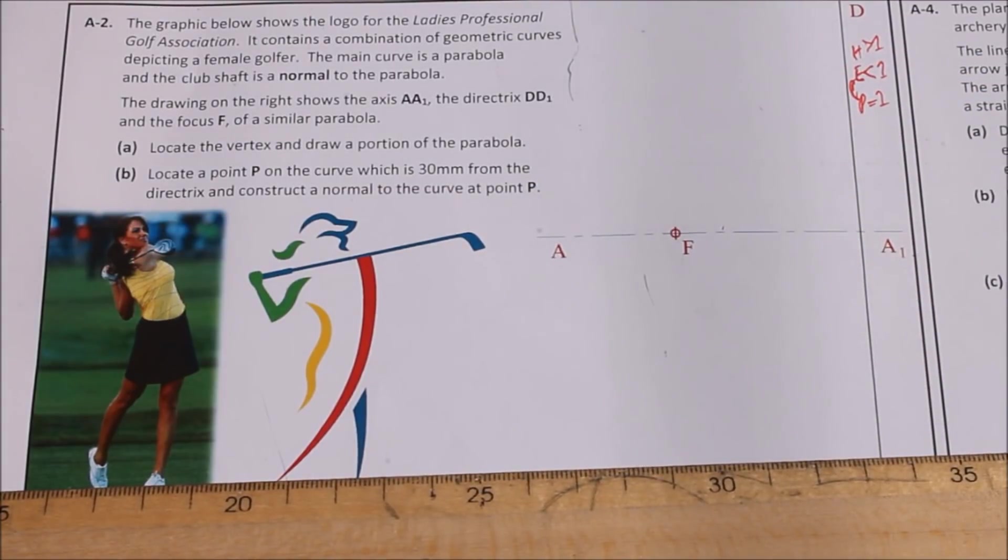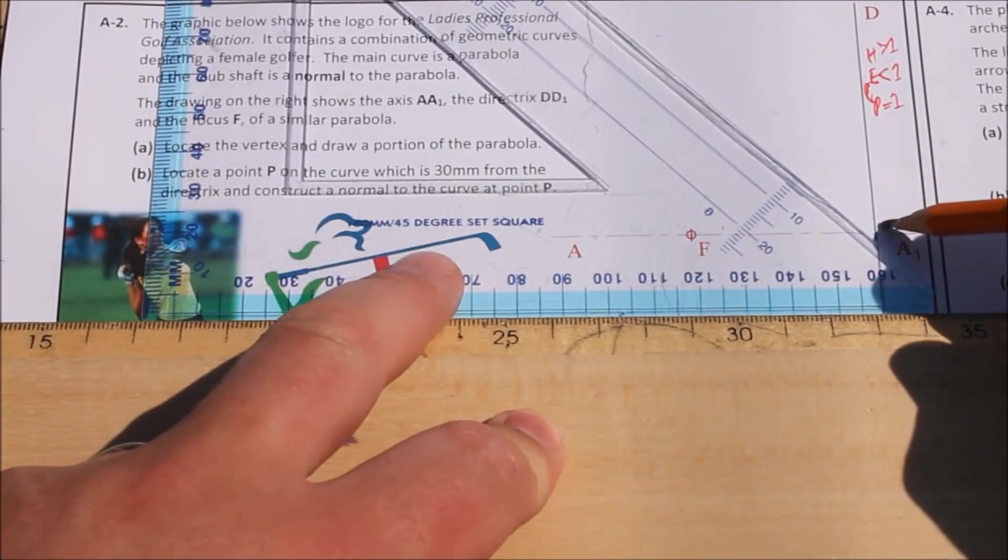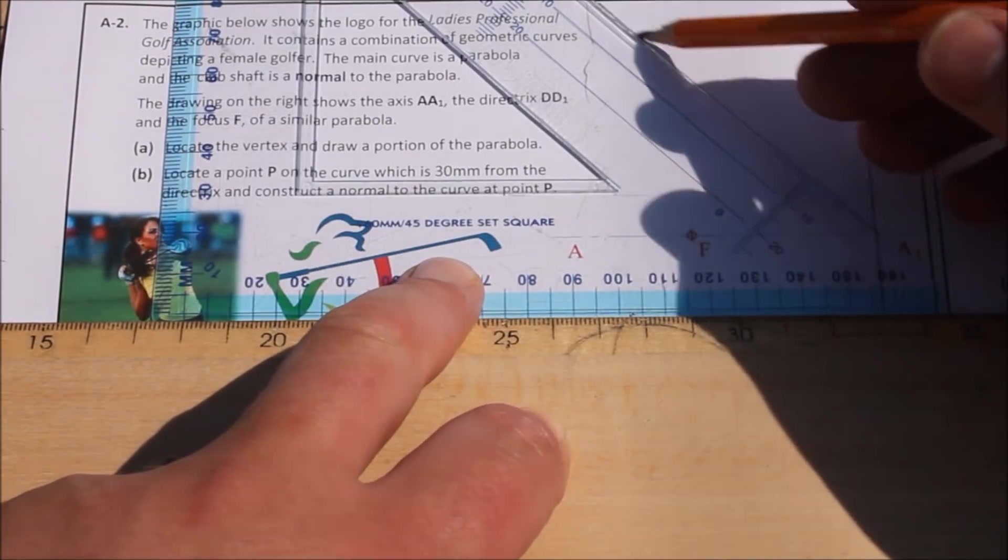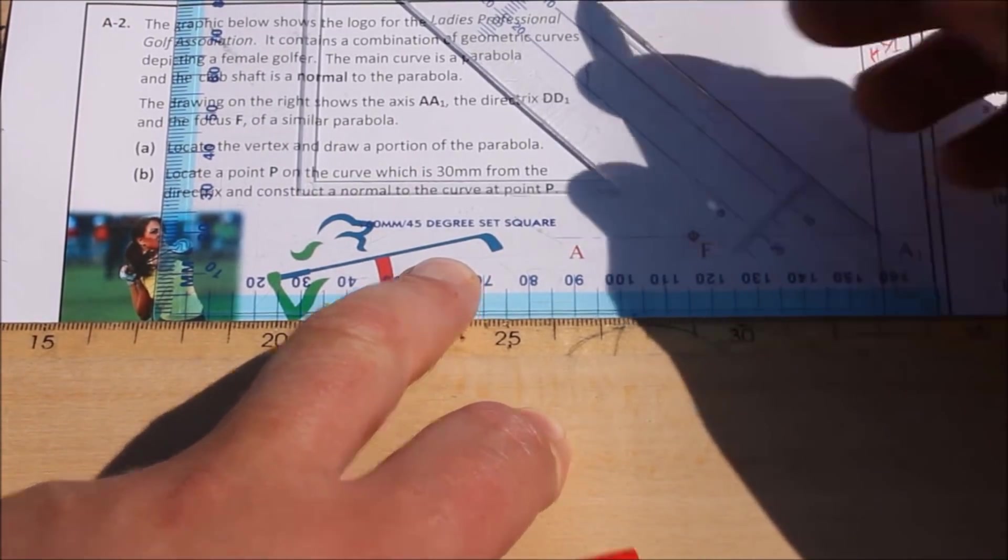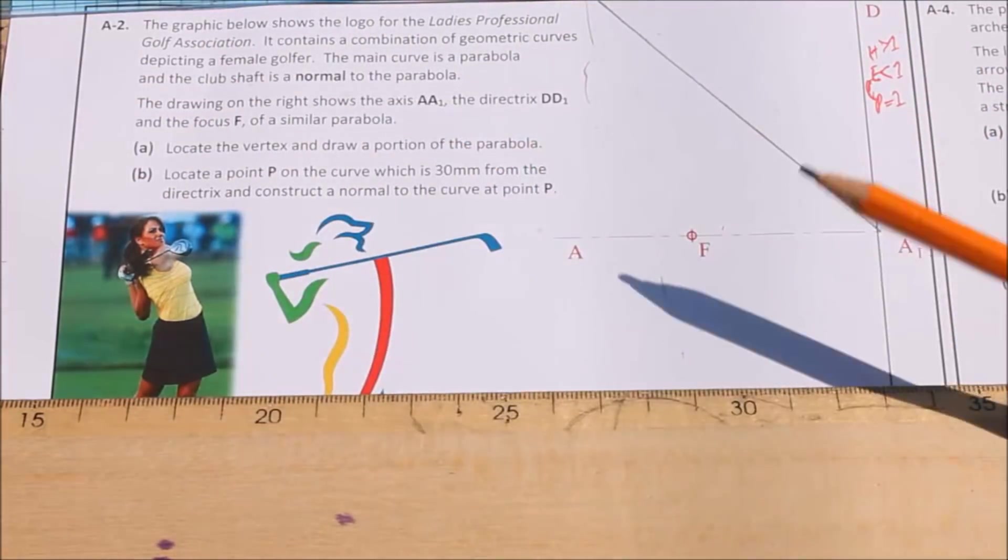So first things first is draw the line of eccentricity. And that will start from your directrix meets your axis. To get, as I said there, locate the vertex and draw a portion. To get the vertex,